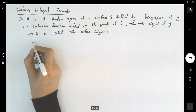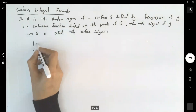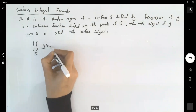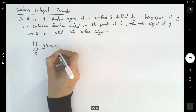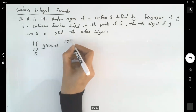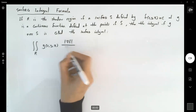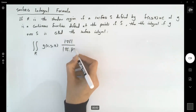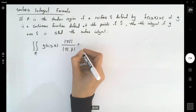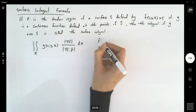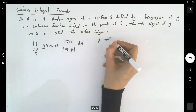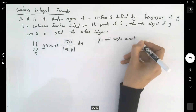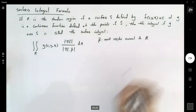It's defined as the double integral over region R of function g, and then we have the magnitude of the gradient of f divided by the magnitude of gradient of f dot unit vector p, dA. Note that p is a unit vector normal to region R.